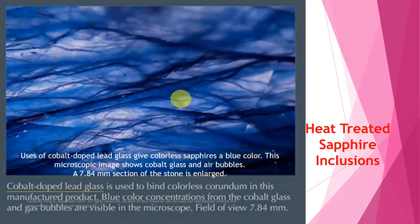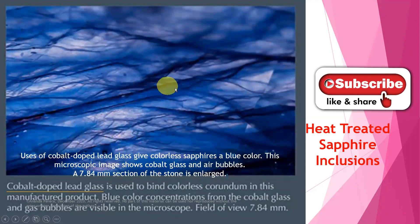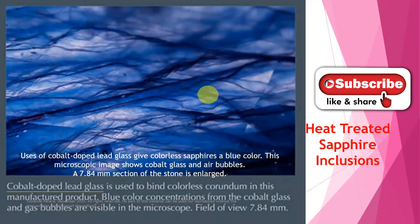Next one is cobalt-doped lead glass filling — it is glass filling. They are taking natural white sapphires and applying cobalt lead glass to get the color, so the colorless sapphire becomes blue. This microscopic image shows cobalt glass and air bubbles — the blue color is from the cobalt glass spreading, and these are the air bubbles. So cobalt lead glass filling is done with high heat, not low heat — that means between 1900 and 2000 degrees. This 7.84 millimeter section of the stone is enlarged.